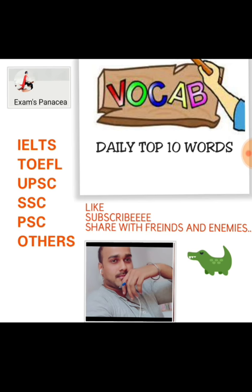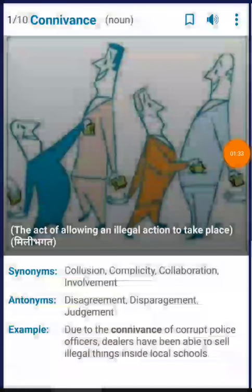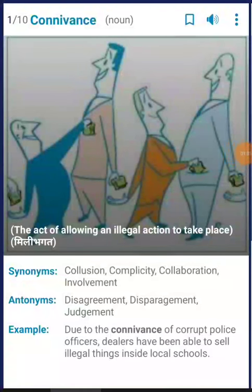Without wasting any time, let's get started. The first word is 'connivance'. It means the act of allowing an illegal action to take place. As you can see in this picture, there are persons who are allowing or passing things to each other — allowing an illegal action to take place. You can use this word 'connivance' for this kind of situation.